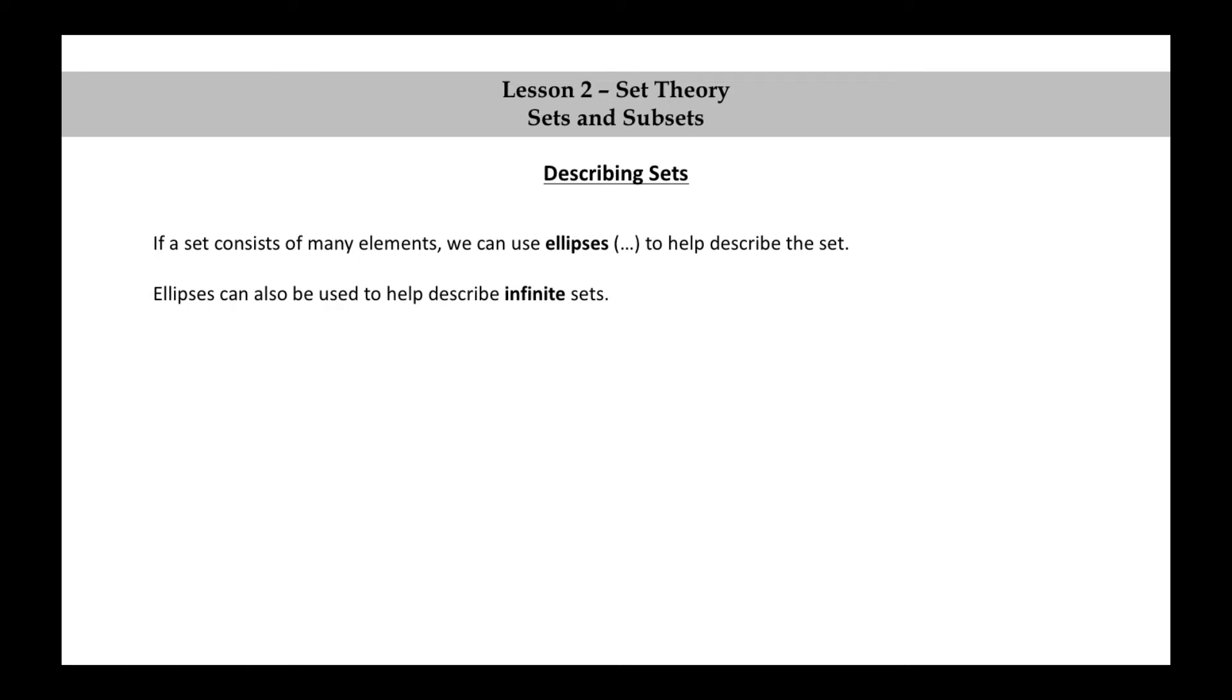Ellipses can also be used to help describe infinite sets. Let's look at some examples of infinite sets. N equals the set consisting of 0, 1, 2, 3, and so on. This is the set of natural numbers. Notice how we use the special font when writing the N to describe this very specific set of natural numbers.